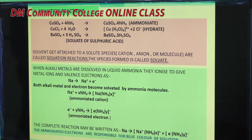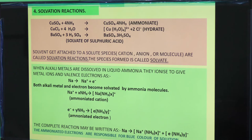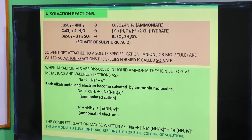An important example of solvation: when alkali metals (Group 1 metals like sodium) are dissolved in liquid ammonia, they ionize to give metal ions and free electrons. Both the metal ions and the electrons become solvated by ammonia molecules, forming ammoniated cations and ammoniated electrons. The presence of these ammoniated electrons causes the solution to become deep blue in color, enabling many reduction reactions in liquid ammonia.